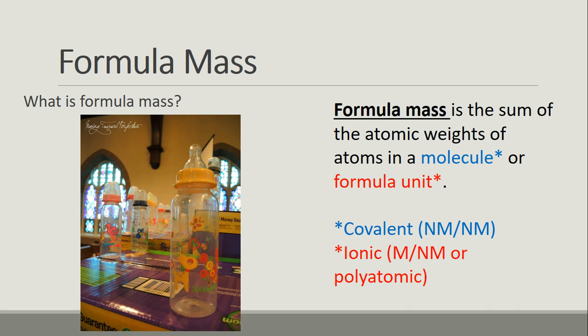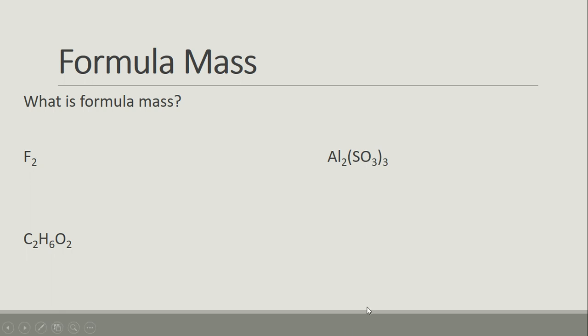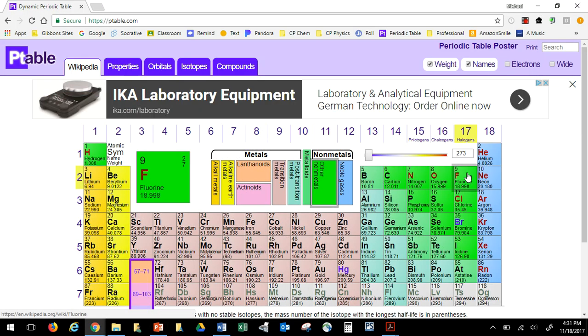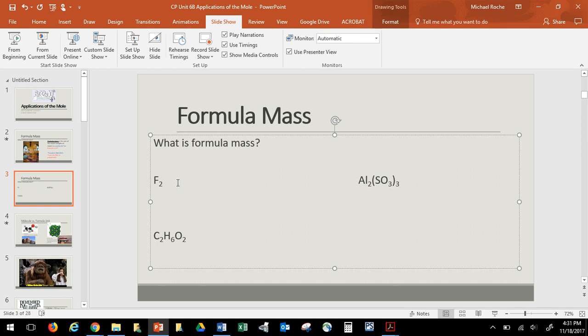So we have fluorine, and fluorine comes as a molecule called F2. If we're going to do F2, we would go to the periodic table and see that fluorine has a mass of 19, 18.998, so that's basically 19. We would say that is 19.0, and there are two atoms of it, so that would mean it has a total mass of 38. And the units of that are grams in one mole.